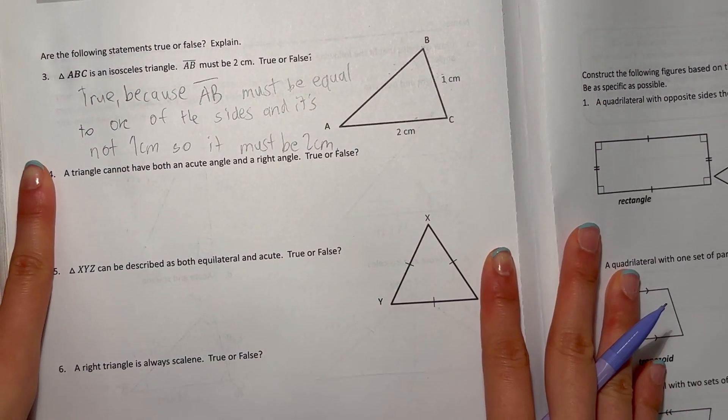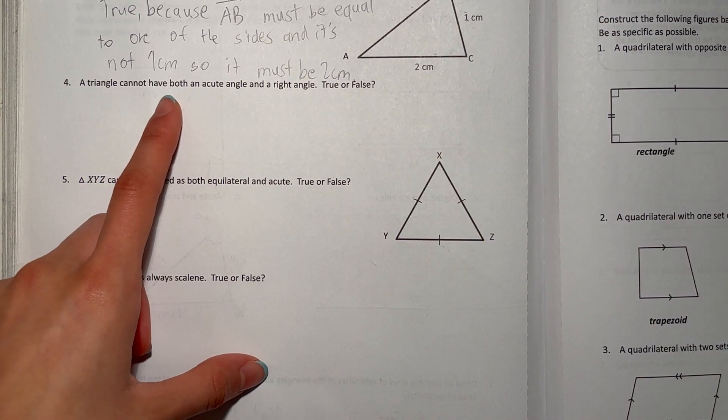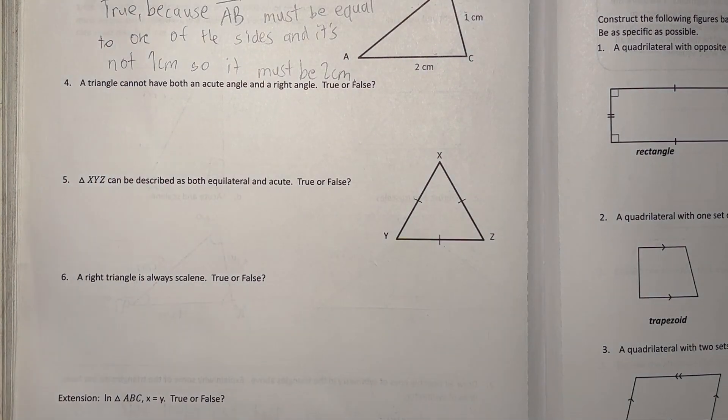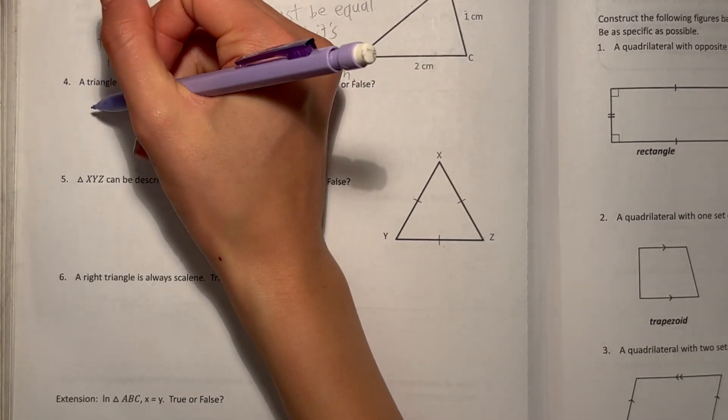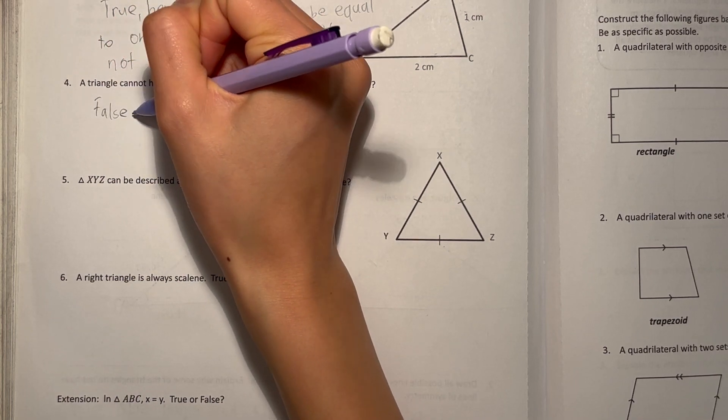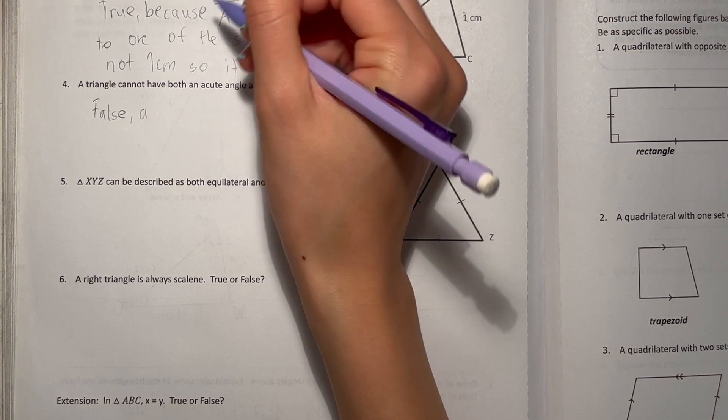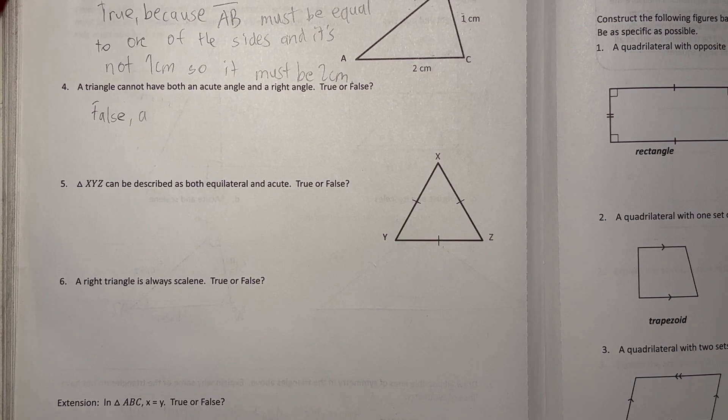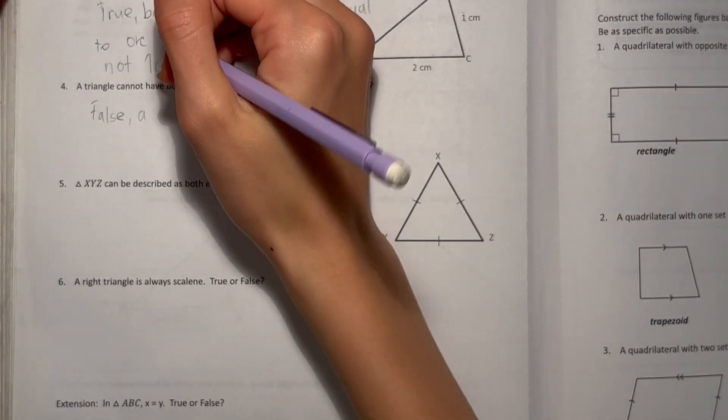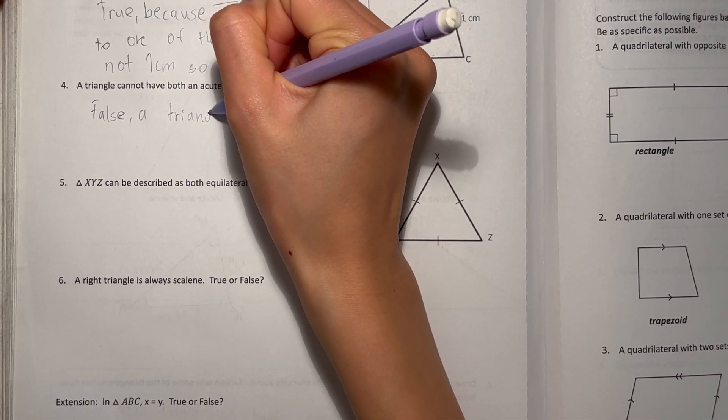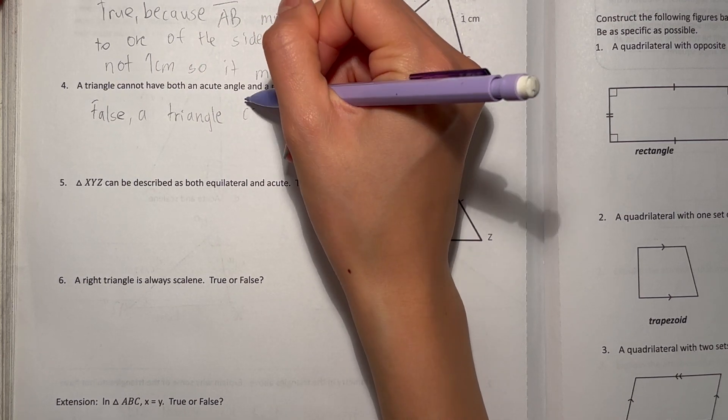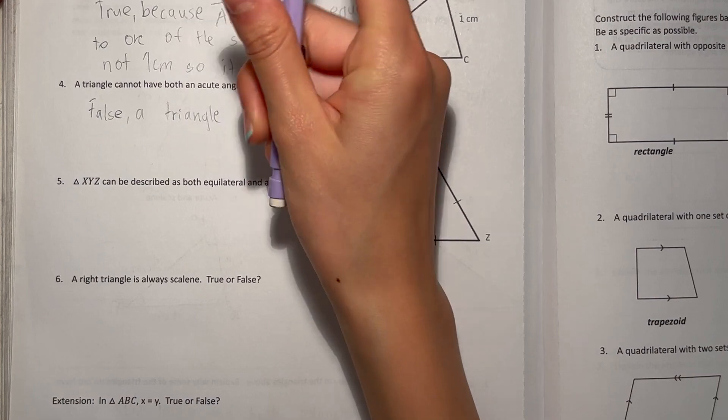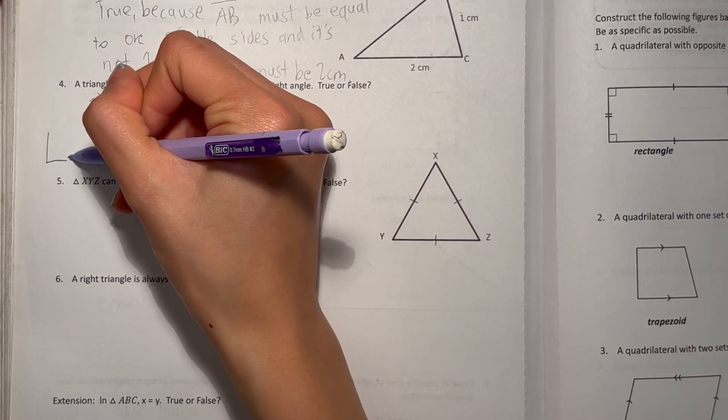All right, number four: a triangle cannot have both an acute angle and a right angle, true or false. Okay, this will be false. Because a triangle, if it has a right angle, it needs an acute angle to close it up. Because it cannot have another... there cannot be two right angles.